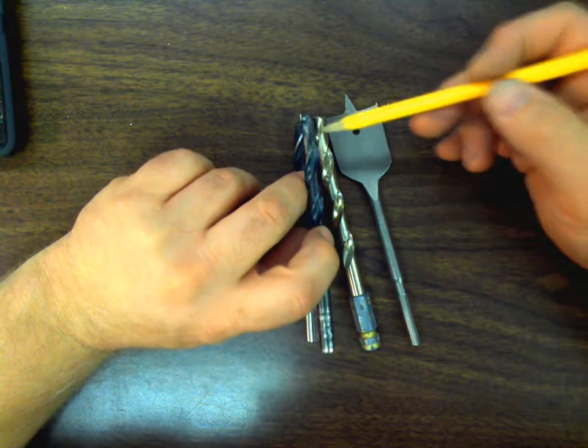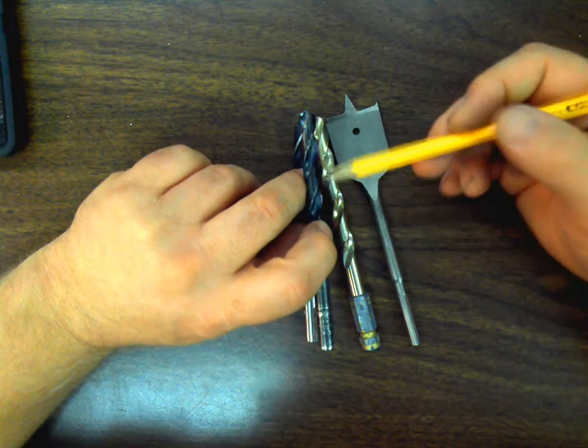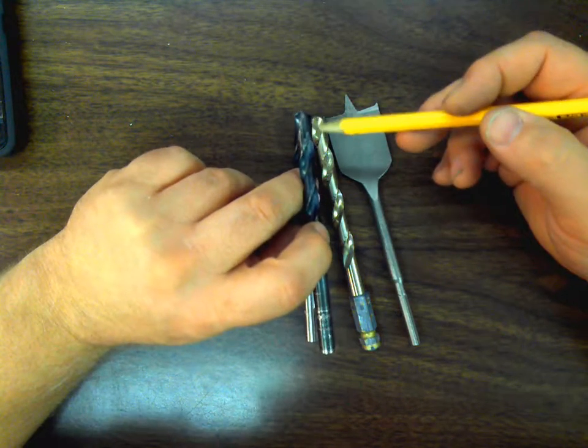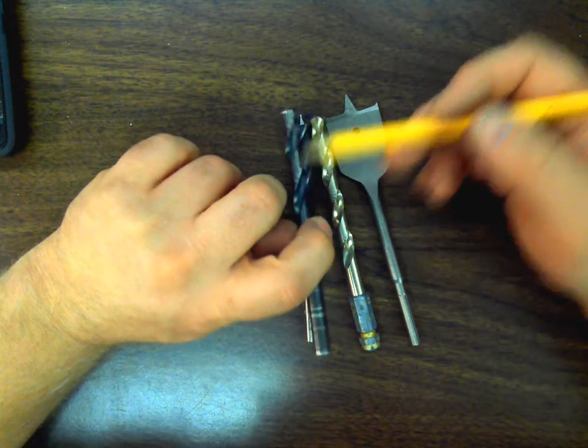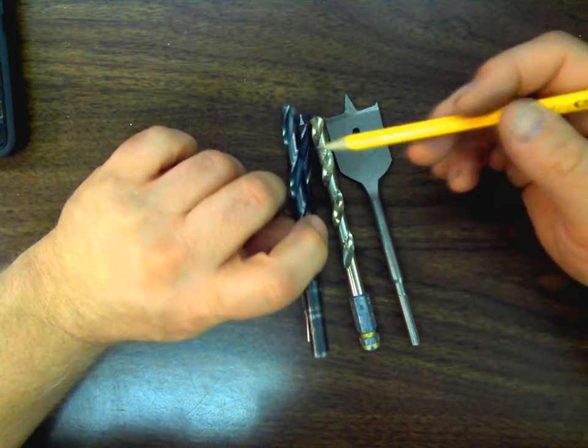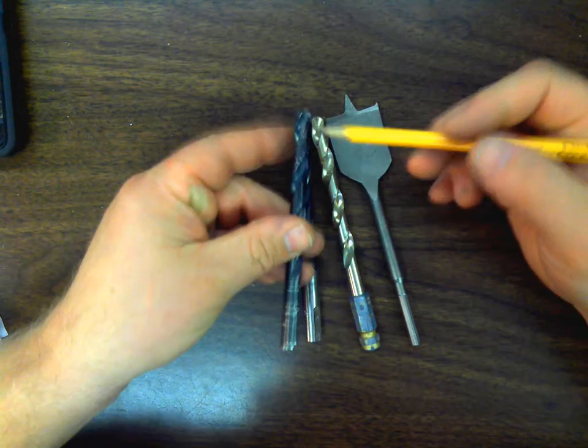Then we have the flute, which is this spiral shape right here. That's called a flute. The purpose of the flute is for chip extraction. That's a big fancy word, chip extraction. It just means to remove and get that material out.